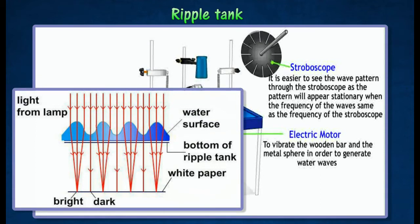The crest focuses the light to form a bright fringe on the white screen, and the trough diverges the light and forms a dark fringe on the white screen.